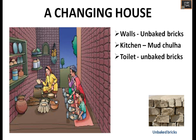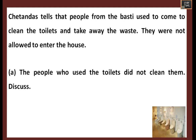They had a big kitchen where they used to place vessels and were living very happily. They also had a separate toilet behind the house, also made with unbaked bricks. Chetan Das says that people from the bhangis community used to come to clean the toilets and take away waste; they were not allowed to enter inside the house.